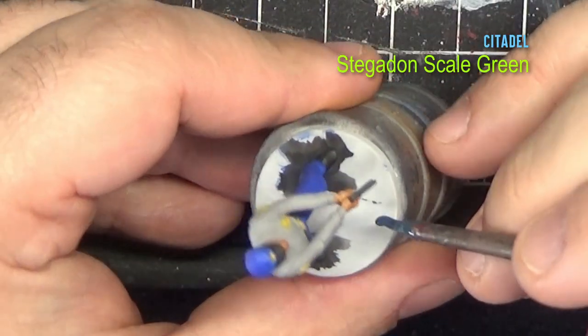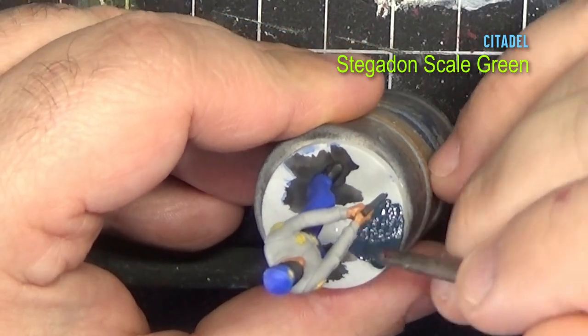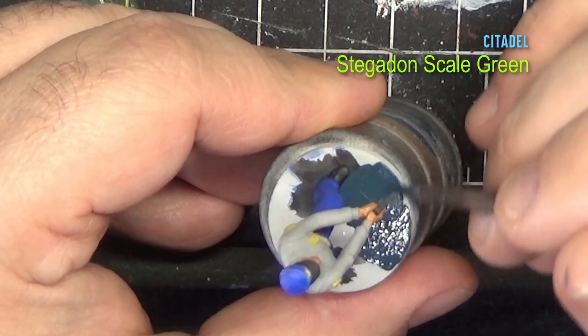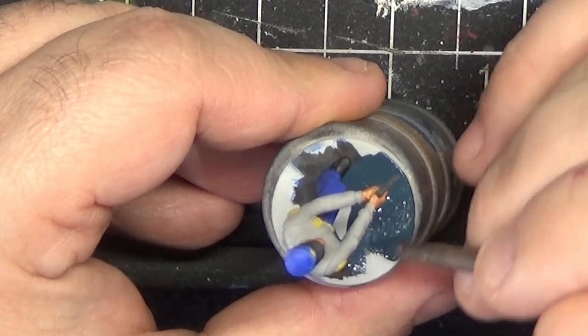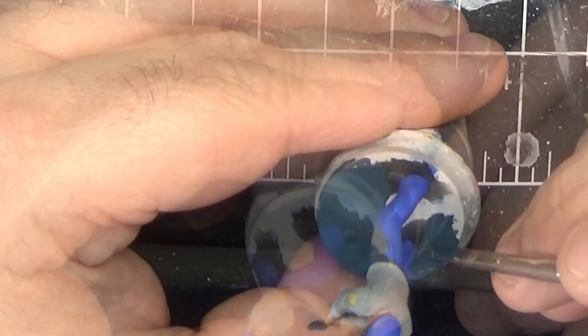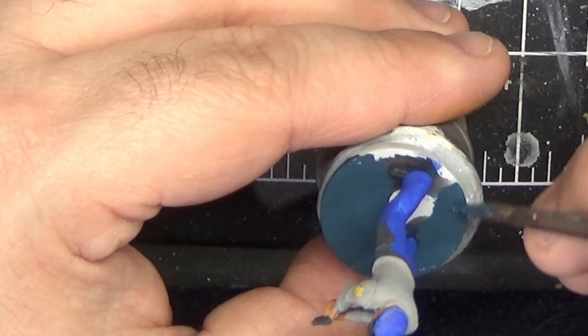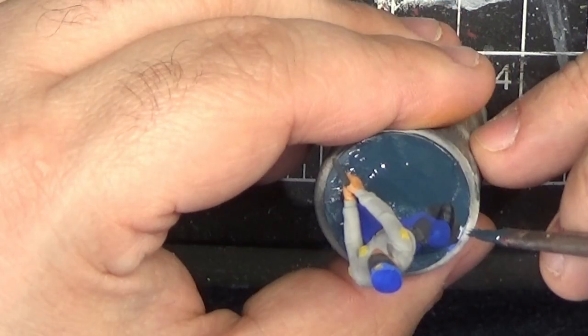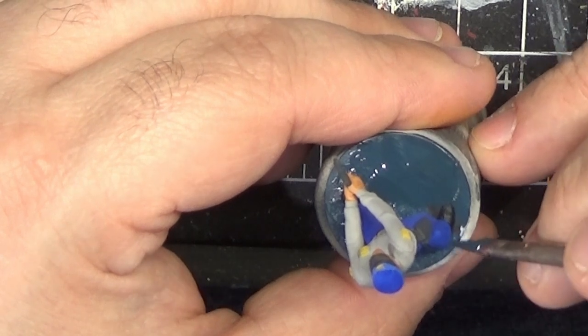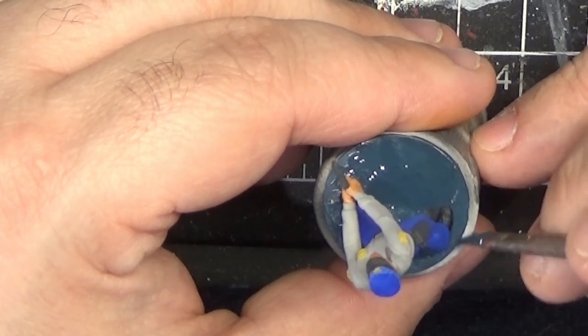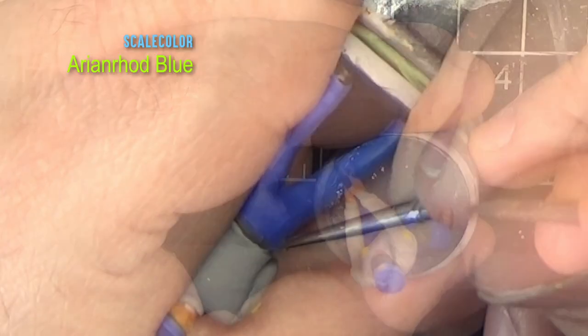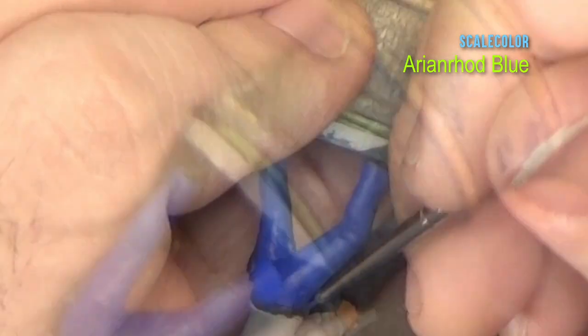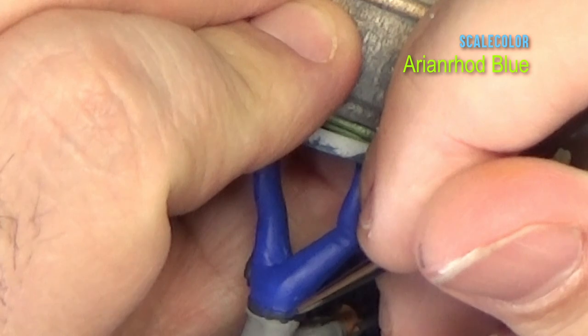Before moving on to the dark lining, I'm going to paint the base. And just like the other characters in this series, I'm using the faction that the hero is a part of. In this case, the Gotham City Police Department, and I've been using Stegadon Scale Green for those. And as a final detail that I would consider to be optional, I'm going through and painting the belt loops using the Aryan Rod Blue.